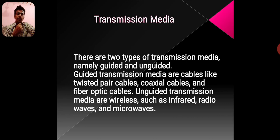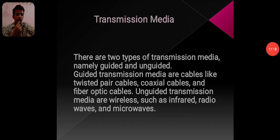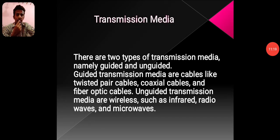Transmission Media. There are two types of transmission media: guided and unguided. Guided transmission media are cables like twisted pair cables, coaxial cables, and fiber optic cables. Unguided transmission media are wireless, such as infrared, radio waves, and microwaves.